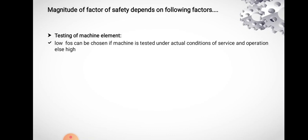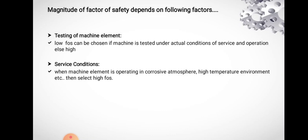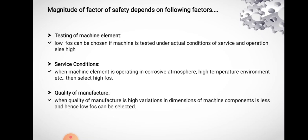Testing of the machine element is another factor. A low factor of safety can be chosen when the component is tested under actual conditions of service and operation. A high factor of safety is necessary when it is not possible to test the machine part, or where there is deviation between test conditions and actual working conditions. Service condition is also important: when a machine element is likely to operate in a corrosive atmosphere or high-temperature environment, a higher factor of safety is necessary. Finally, quality of manufacture: when quality is high, dimensional variations are small and a low factor of safety can be selected, but a high factor of safety is required to compensate for poor manufacturing quality.